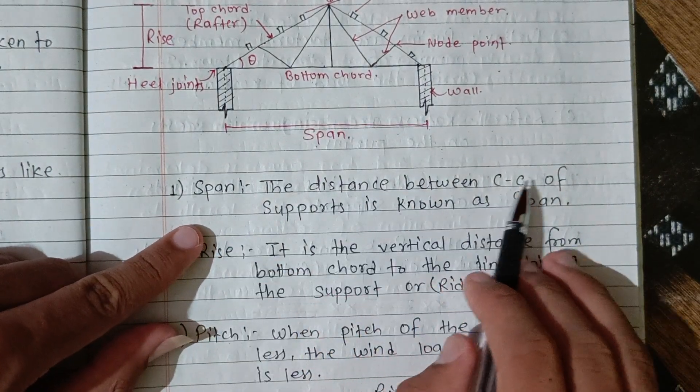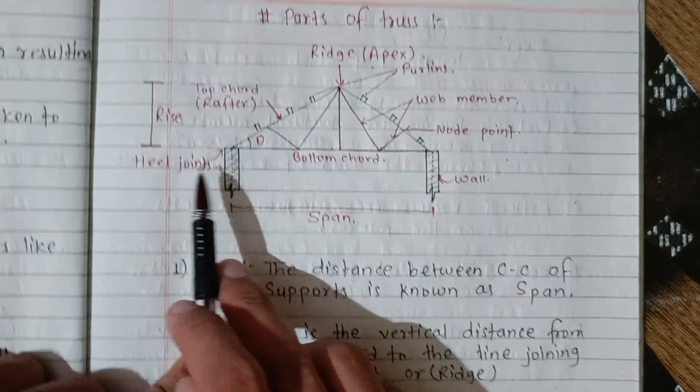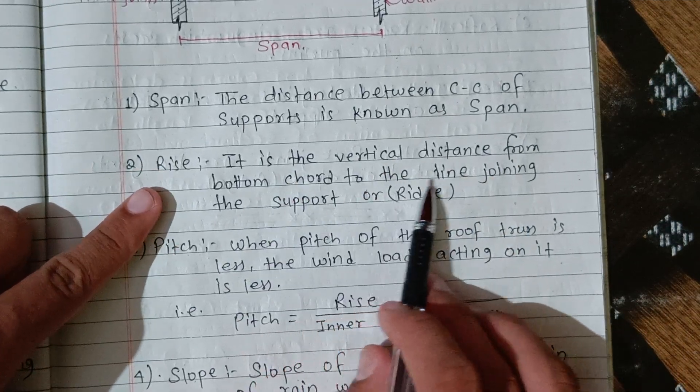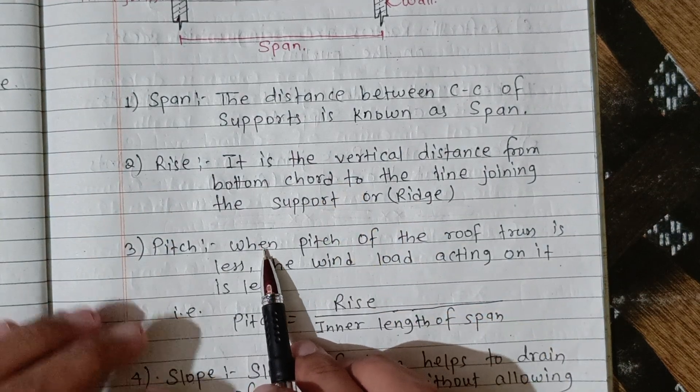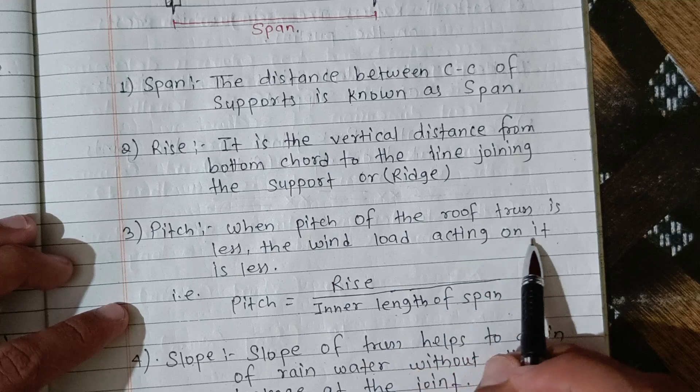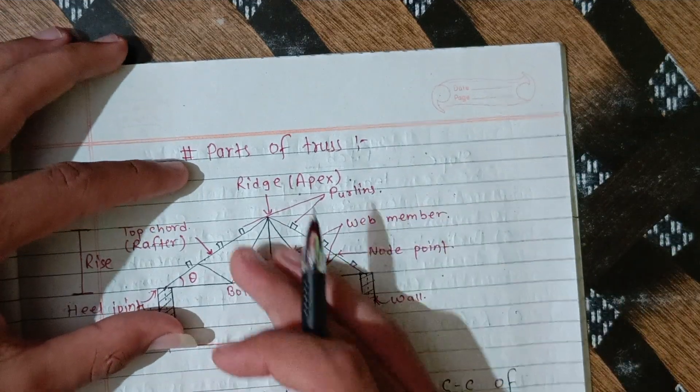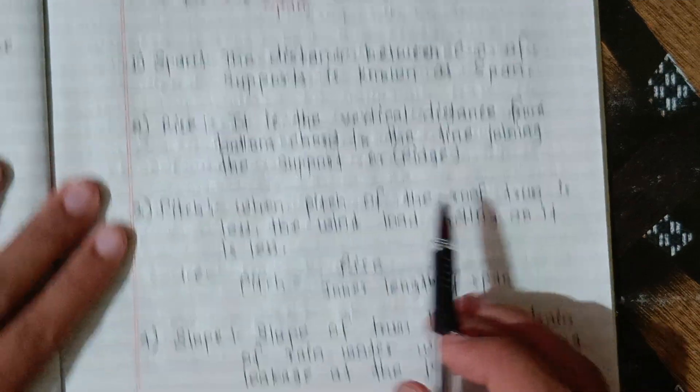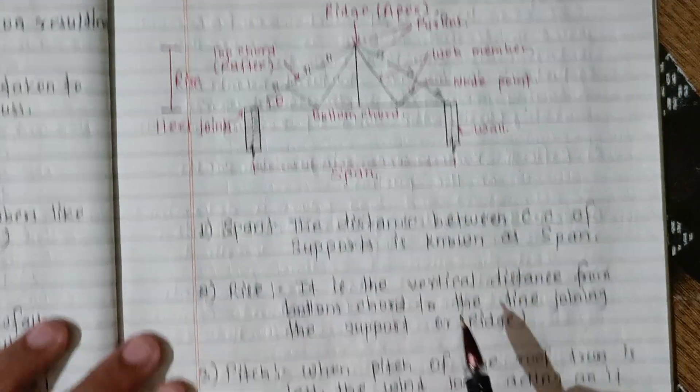Span: the distance between center to center of support is known as span. Rise: it is the vertical distance from the bottom chord to the line joining the support or reach. Pitch: the pitch of the roof truss affects the wind load action. Rise upon span is the formula. Pitch = rise/span.